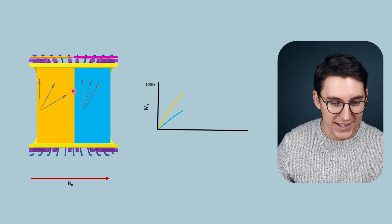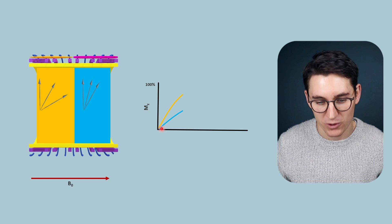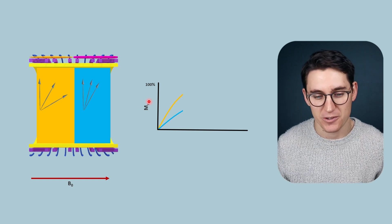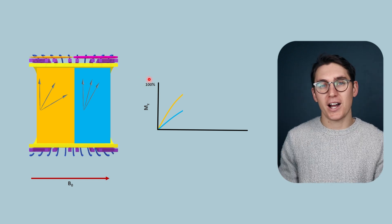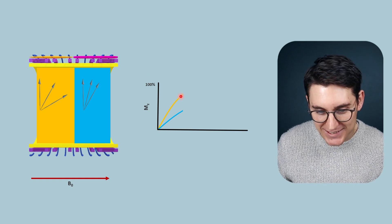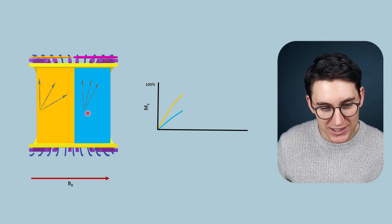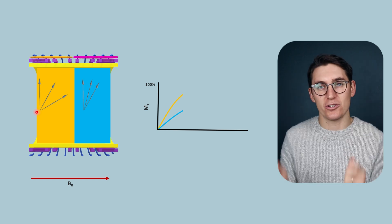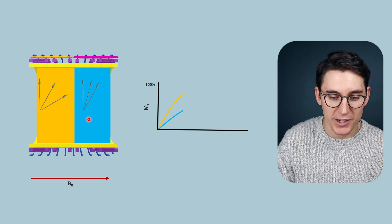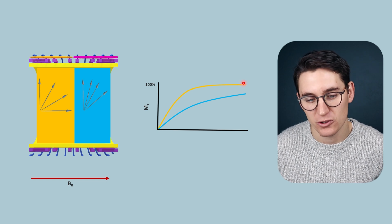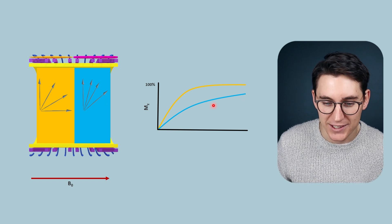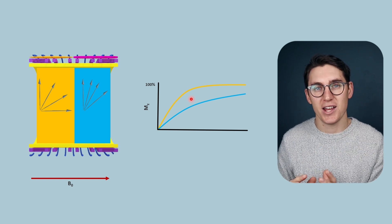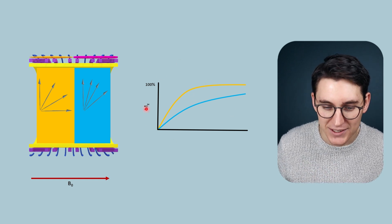As we wait more time, fat continues gaining longitudinal magnetization faster than CSF. We can plot this on a graph with the y-axis representing net longitudinal magnetization up to 100% full recovery. Fat gains that longitudinal magnetization faster because in CSF there's less lattice for interaction, while in fat there's more lattice and spin-lattice interaction is more likely due to how triglycerides react to the magnetic field. Eventually fat reaches 100% recovery while CSF is still slowly recovering. It's these differences that allow us to get T1 contrast within an image — analogous to how T2 differences gave us T2 contrast.